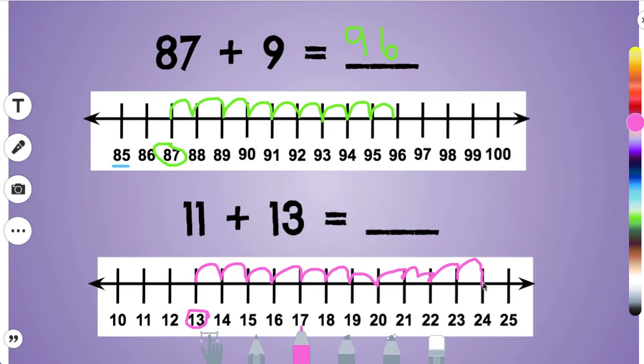Now I can show you a quicker way to do this. I can start at 13 and start with a hop of 10 because I know 13 plus 10 is 23. So I will start here and I'll do a big hop of 10 to the 23, and then I'll do one more little hop. So then I'm adding 11 and I also end up on 24. So I know 11 plus 13 is 24.